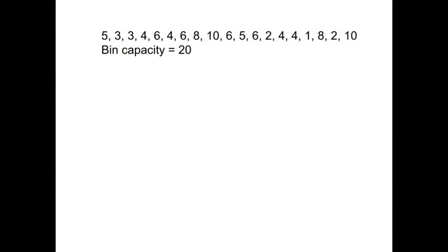The full bin algorithm is quite straightforward. All we do is first look for combinations of numbers that will fit the bins completely. Here we've got a bin capacity of 20 and a list of numbers at the top that we've got to fit into them.